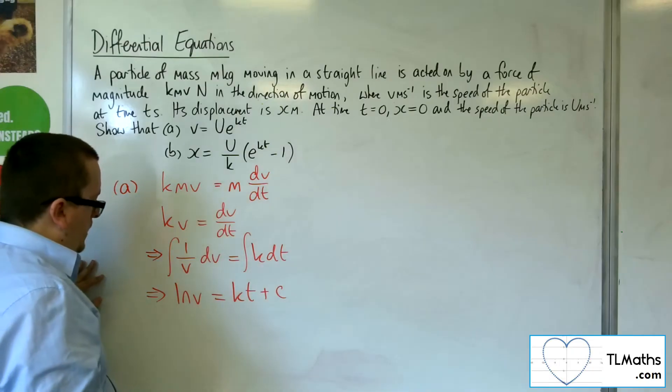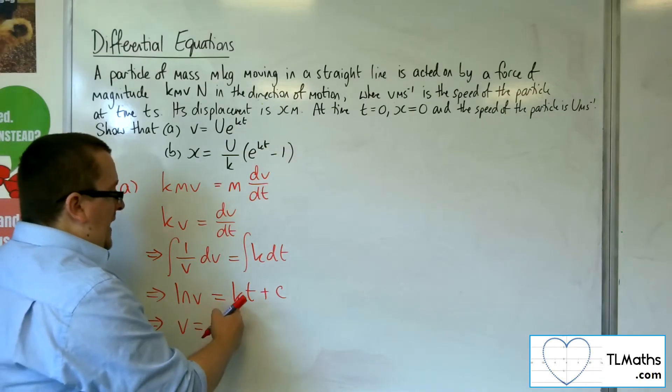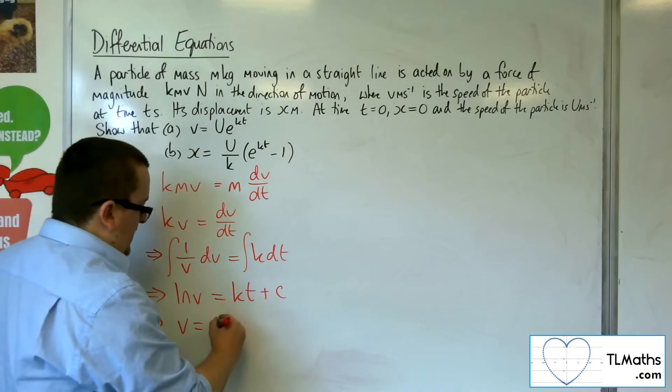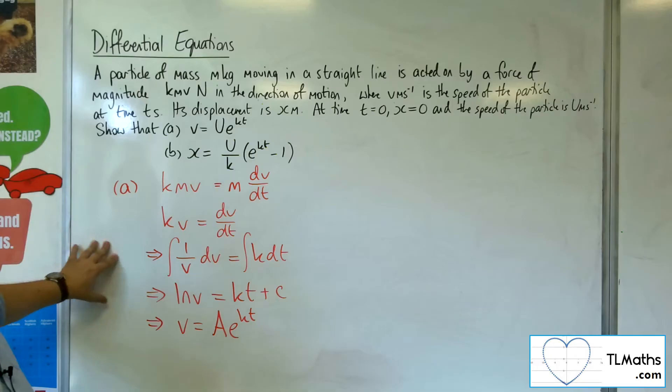So that means that v equals e to the kt plus c, which is just Ae to the kt, for some constant A.